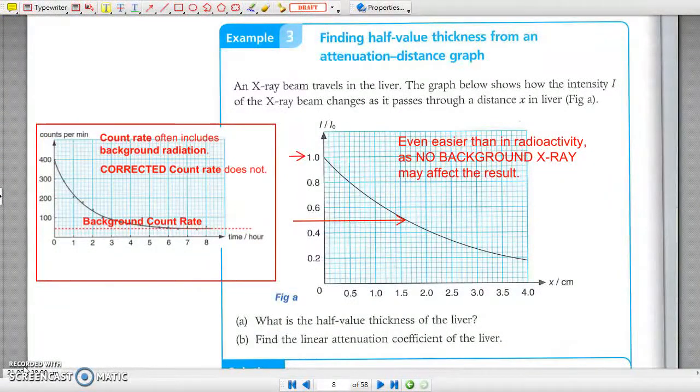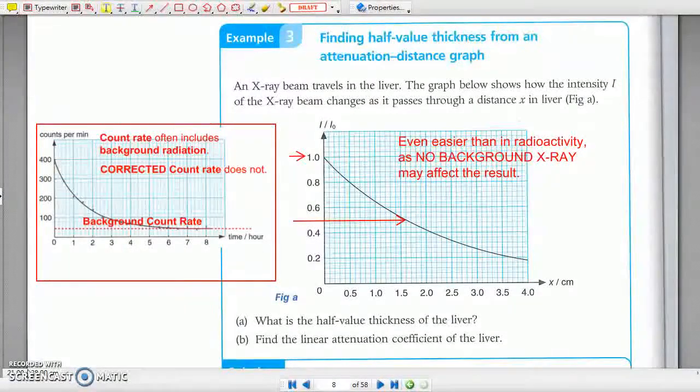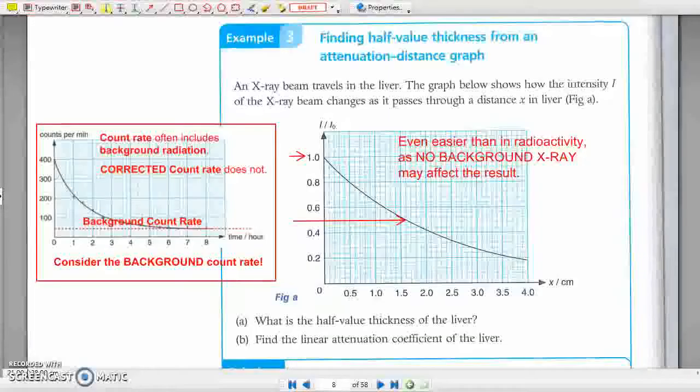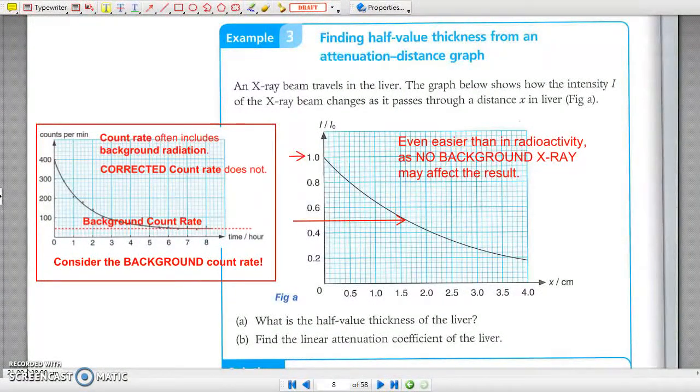Unlike the case when you find the half-life for radioactivity, there is now no issue of background reading, and so reading half-value thickness is just a piece of cake.